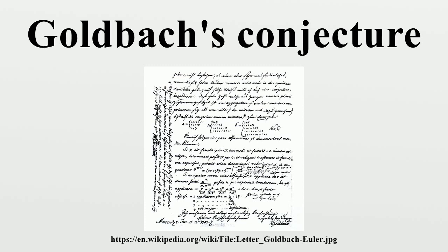Goldbach's third version is the form in which the conjecture is usually expressed today. It is also known as the strong, even, or binary Goldbach conjecture, to distinguish it from a weaker corollary. The strong Goldbach conjecture implies the conjecture that all odd numbers greater than seven are the sum of three odd primes, which is known today variously as the weak Goldbach conjecture, the odd Goldbach conjecture, or the ternary Goldbach conjecture. While the weak Goldbach conjecture appears to have been finally proved in 2013, the strong conjecture has remained unsolved.